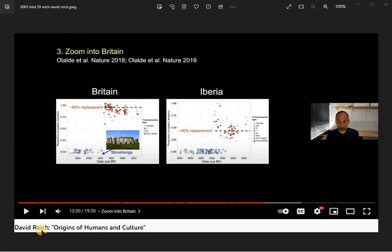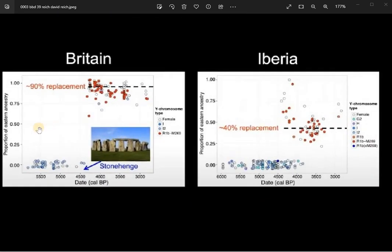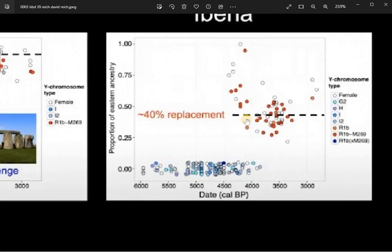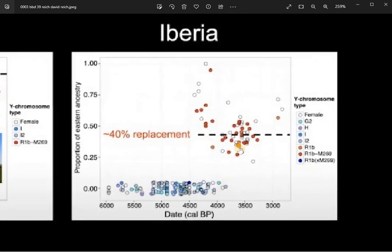David Reich, in 'Origins of Humans and Culture,' has a chapter that zooms into Britain, where you can see that the former haplogroups were I and I2, and they were turned over roughly between 4,000 and 4,500 years ago by the red dot which is R1b. Something similar happens in Iberia, where R1b overturns blue which is again I and I2, but in this case also H and G2.